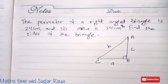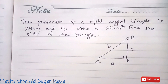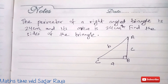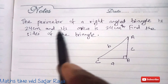Hello friends, welcome to my channel Math Time with Sagaraya. In this video I will teach you how to find the sides of a right angle triangle when its area and perimeter are given. Before starting, I would like to request that you please subscribe to my channel to get notifications of new videos. Now without any delay, let's move to the question on screen.